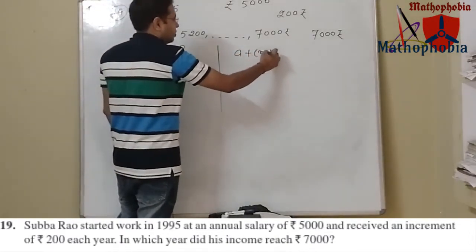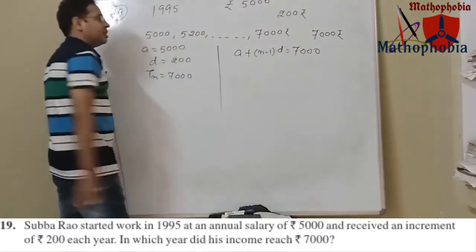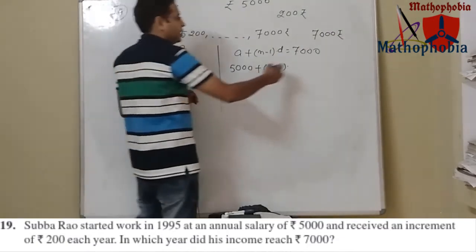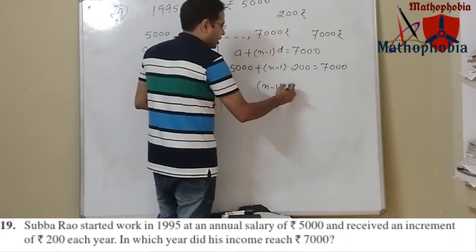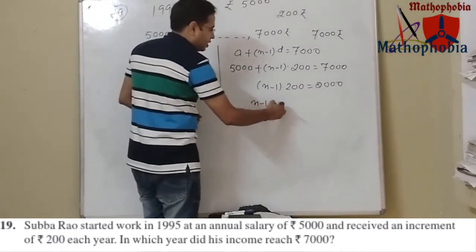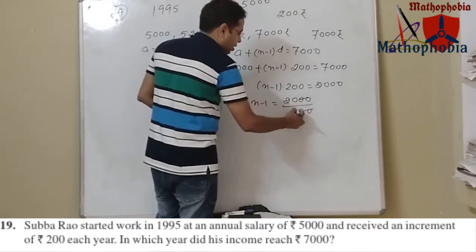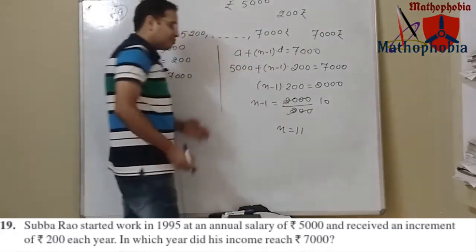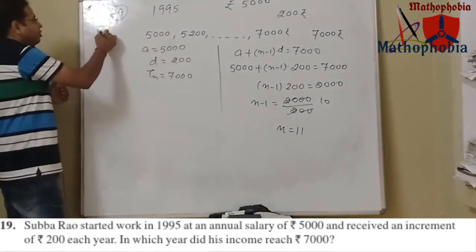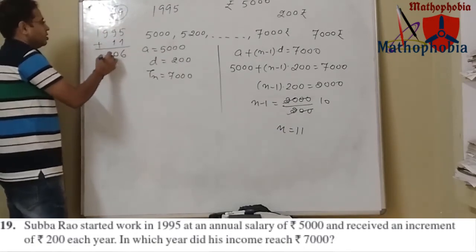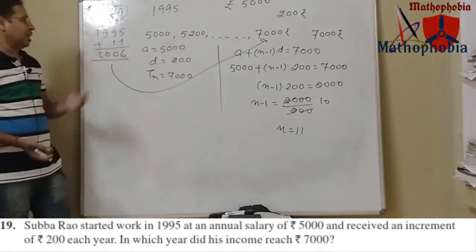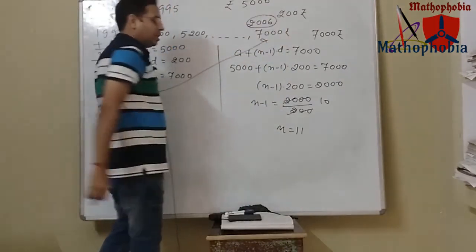Applying the formula: 5000 + (n-1)×200 = 7000. So (n-1)×200 = 2000, giving n - 1 = 10, therefore n = 11. After 11 years his income will reach 7000 rupees. Since he started in 1995, adding 11 years gives 2006 — he will be getting 7000 rupees in the year 2006.